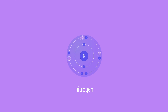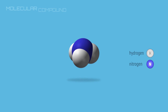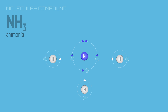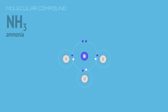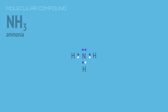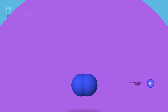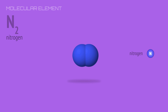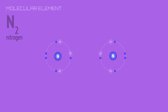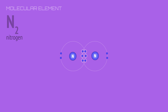A nitrogen atom has five outer electrons, and so three empty locations to complete the outer shell with eight electrons. As a result, it forms three covalent bonds. In a molecule of ammonia, these three bonds are formed as each hydrogen atom shares electrons with the nitrogen atom. Each pair of shared electrons is a single covalent bond. But in a molecule of nitrogen, the nitrogen atoms complete their outer shells by sharing three pairs of electrons — what we call a triple covalent bond.